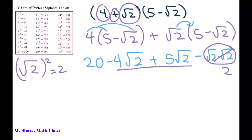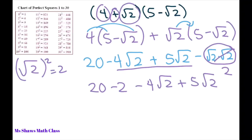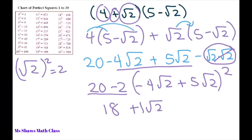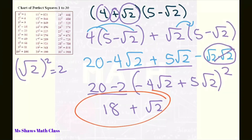Now group like terms: 20 minus 2 gives 18, and negative 4√2 plus 5√2 gives positive √2 — you don't write the 1 in front. So the final answer is 18 + √2, and you can't simplify further. That's it — thank you, have a nice day!